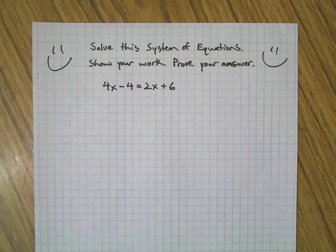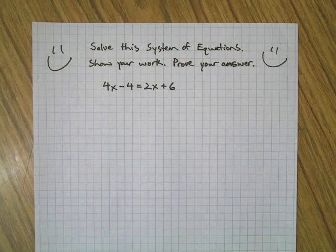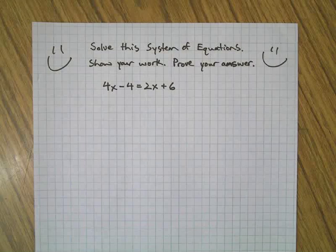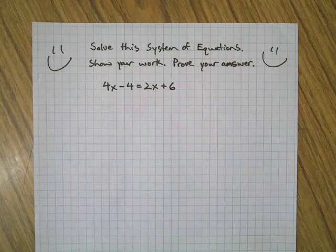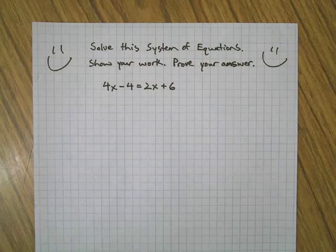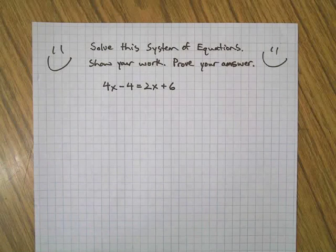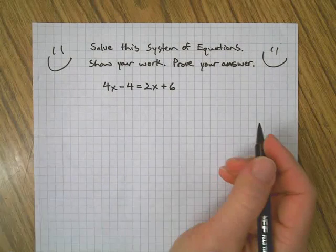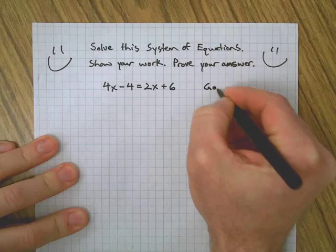All right, today's the day we're going to learn how to solve a simple system of equations with a single variable. You're going to show your work and you're going to also learn how to prove your answer. Begin by copying down this system of equations: 4x minus 4 equals 2x plus 6. Remember our goal, as we've talked about...